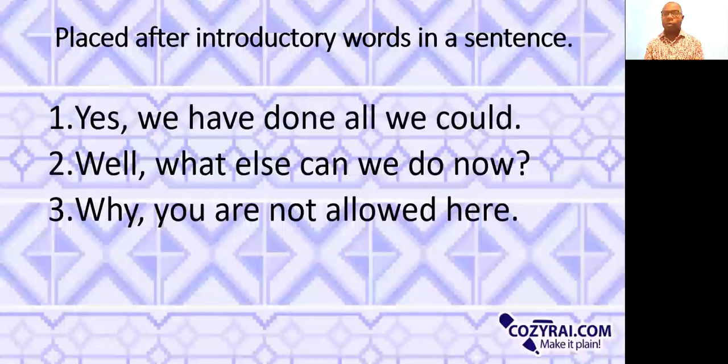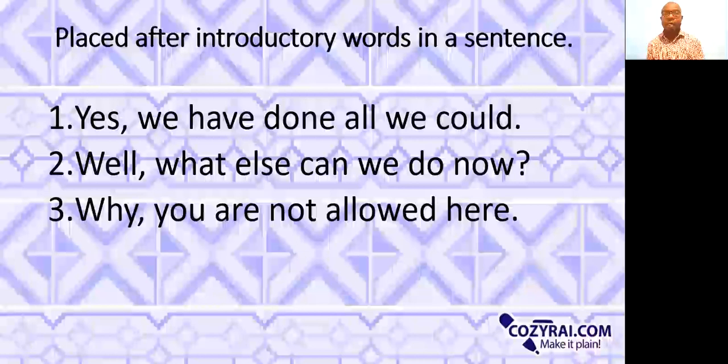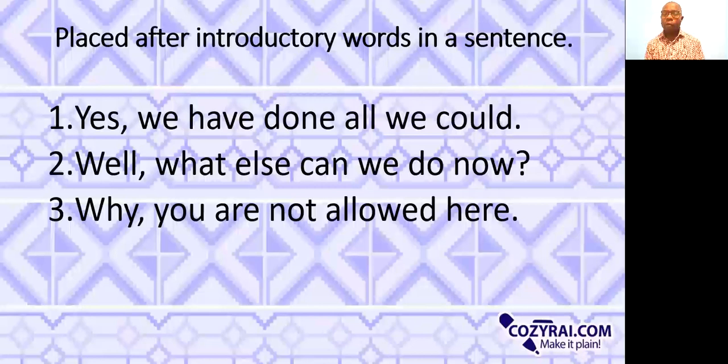One of the ways we use the comma is that it is placed after introductory words in a sentence. For example, 'Yes, we have done all we could.' 'Yes' is an introductory word and therefore is separated from the rest of the sentence by a comma. Example two says, 'Well, what else could we do now?'